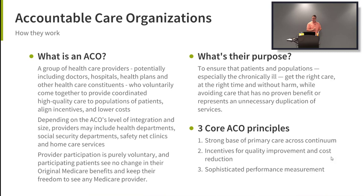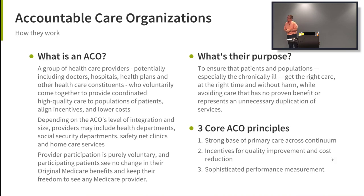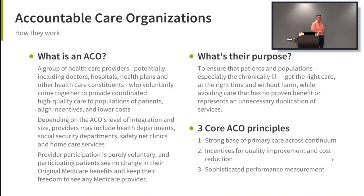ACOs obviously aim to keep people healthy. Because they started with Medicare, they tend to target chronically ill and high-risk populations — Medicare covers people on disability or over 65. They also aim to eliminate waste: lower costs, higher quality. The three core principles are: develop a strong primary care network, change incentives to increase quality and lower cost, and excel at performance measurement.